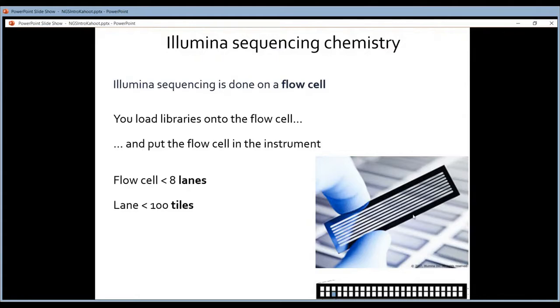Illumina sequencing is done on a device called the flowcell. You can see it here. This is the old flowcell. They have newer versions nowadays, but the old flowcells are still heavily in use.